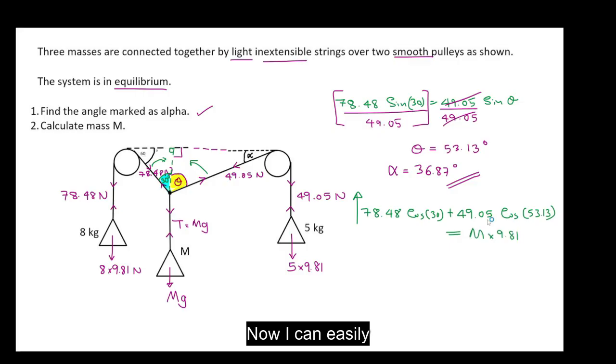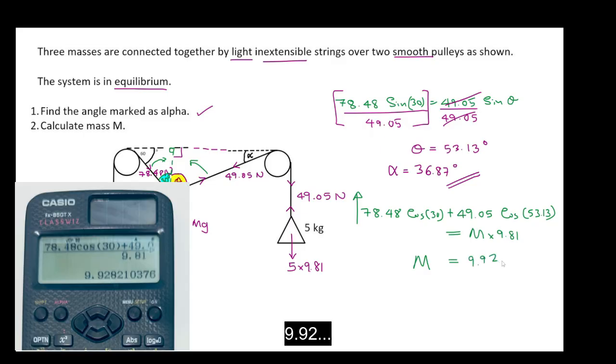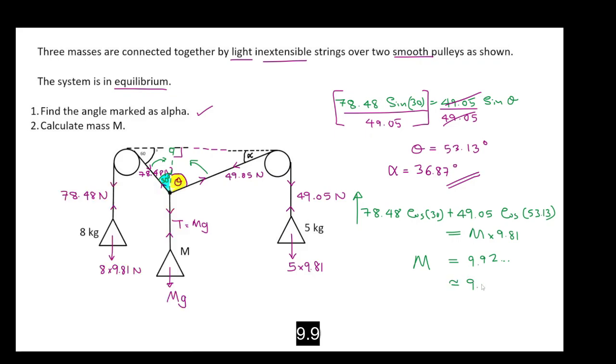Now I can easily work out my value of m. So the answer for m is 9.92. So let's call it 9.9 kilograms.